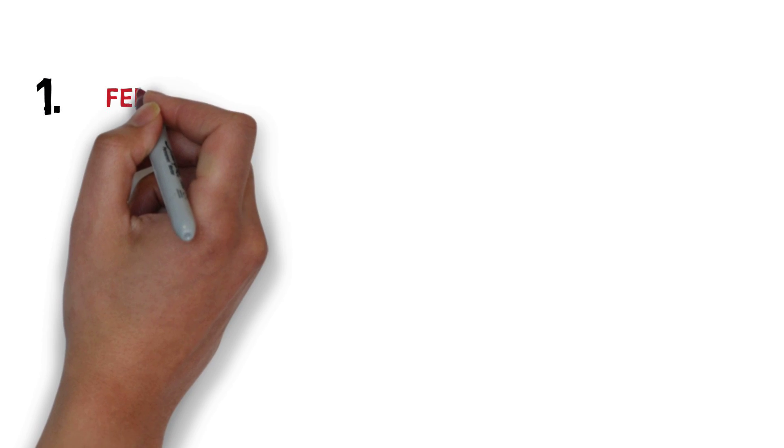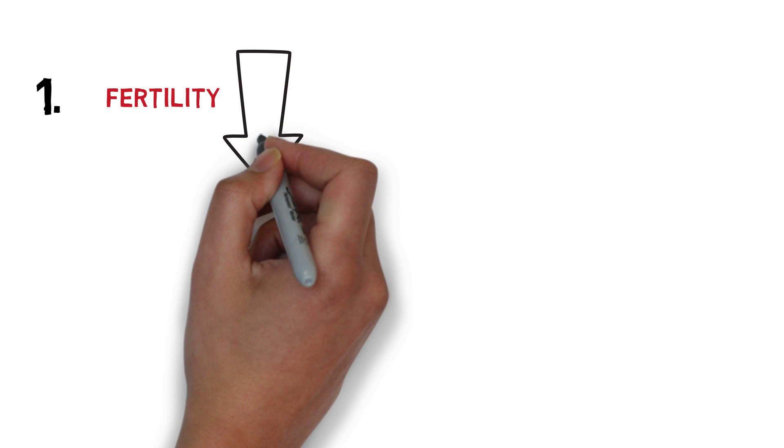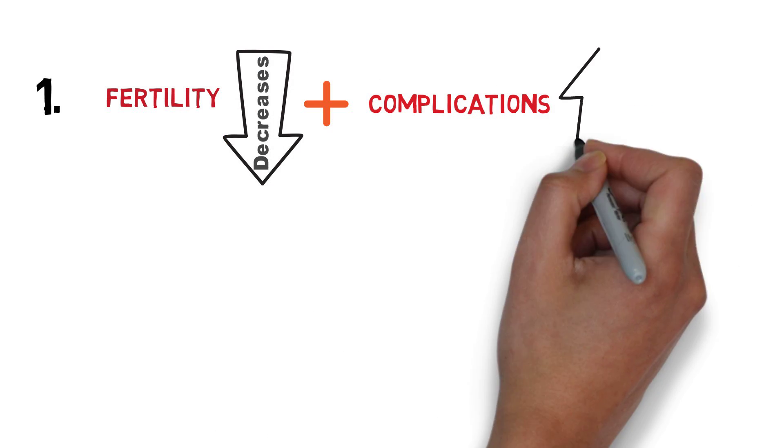So the data tells us two core things. Fertility decreases with age, and complications increase.